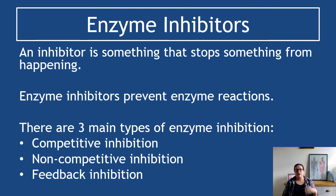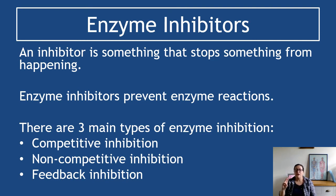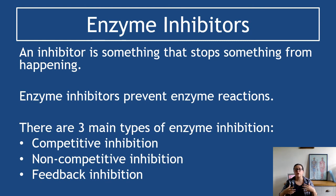Enzyme inhibitors prevent enzyme reactions. There are three main types you need to know: competitive inhibition, non-competitive inhibition, and feedback inhibition. This is a really good essay topic — there are many areas where you can gain marks. For some of you, your assignment might even be based on an inhibitor, so being able to state whether it's competitive, non-competitive, or feedback inhibition and describe their features may get you points for underlying biology.